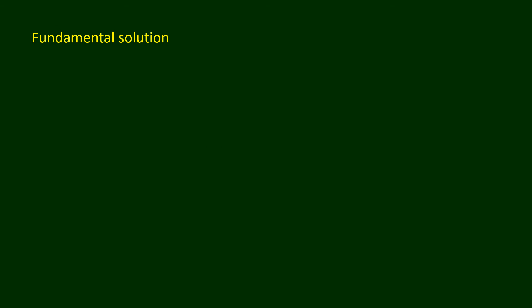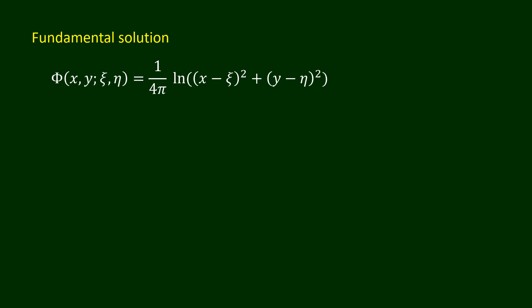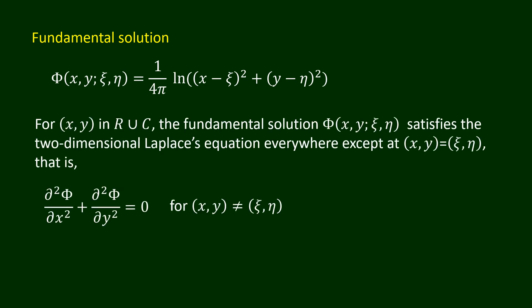Here is the fundamental solution: capital Phi(x, y, xi, eta) = (1 over 4 pi) times the natural log of (x minus xi) squared plus (y minus eta) squared. For points (x, y) in the region R union C, the fundamental solution capital Phi satisfies the two-dimensional Laplace's equation everywhere, except at (x, y) equals (xi, eta).